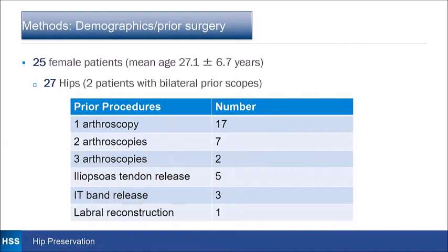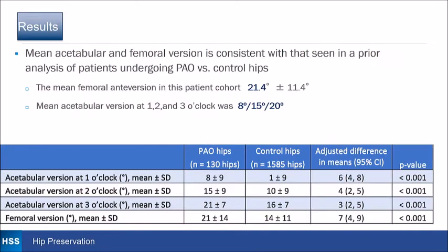There were 25 female patients and 27 hips; two patients had bilateral hip arthroscopies. One arthroscopy was done in 17 patients, two in seven, and three arthroscopies in two. There were five iliopsoas tendon releases, two IT band releases, and one labral reconstruction. The mean femoral anteversion was 21 degrees and the mean acetabular version at 1, 2, and 3 o'clock was 8, 15, and 20 degrees.